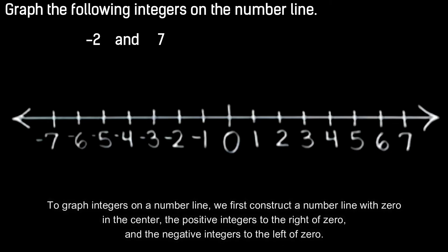To graph negative two, we're simply going to move two units to the left of zero along our number line, and we can just put a circle at negative two. And then to graph positive seven, we're just going to move seven units to the right of zero along our number line, and we can just put a circle at positive seven. And we have graphed negative two and positive seven on the number line.